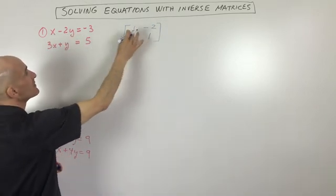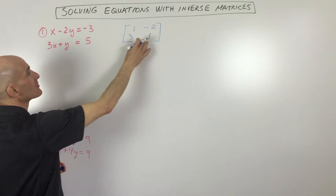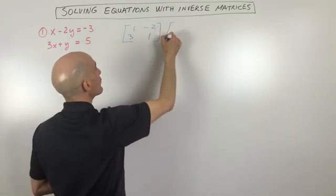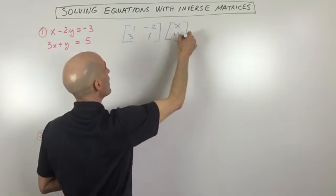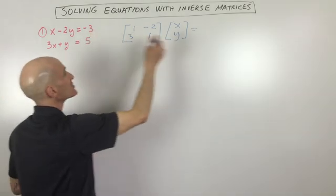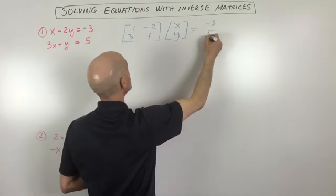So you can see this is 1x, negative 2y, 3x, positive 1y. Then I'm going to write the variables x and y, and then I'm going to write the solutions as a matrix, negative 3, 5.